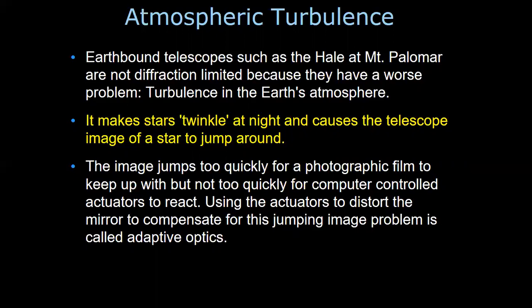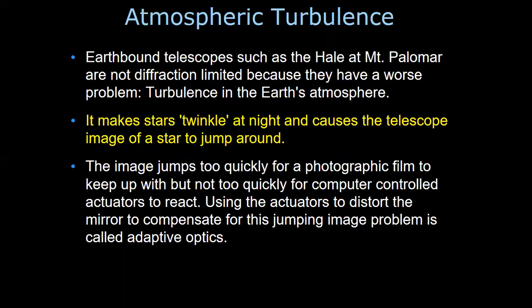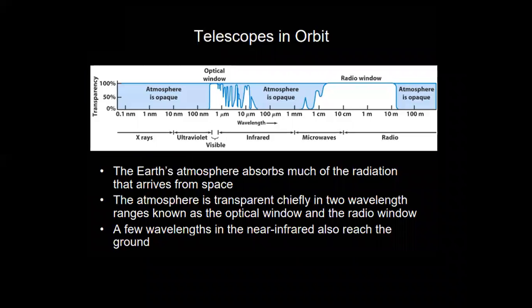The image jumps too quickly for photographic film to keep up with, but not too quickly for computer-controlled actuators to react. Using actuators to distort the mirror to compensate for this jumping image problem is called adaptive optics. I already showed you adaptive optic pictures of Uranus earlier.